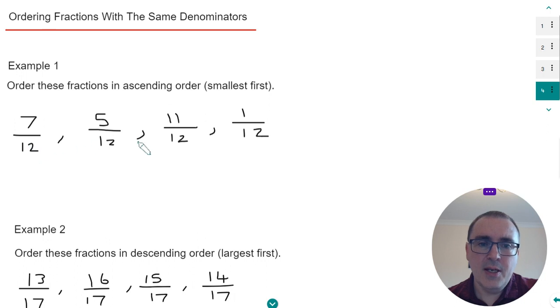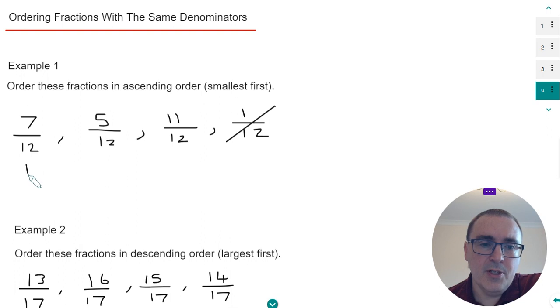Since the denominator is all the same, we just need to look at the numerators, that's the top numbers. So we just need to look for the smallest numerator, which is 1 twelfth. So this would be our smallest fraction.